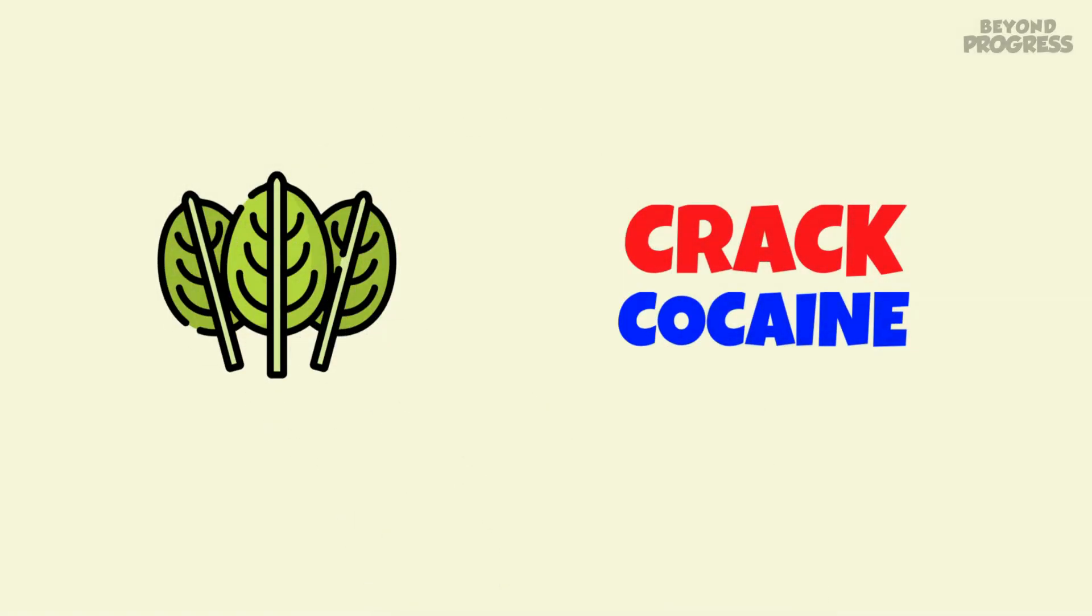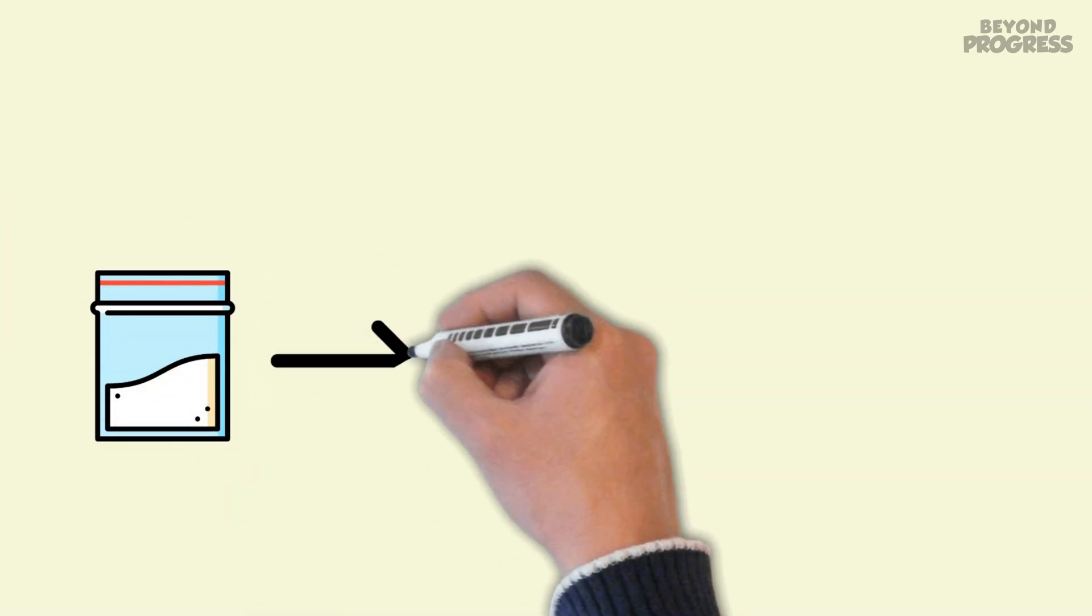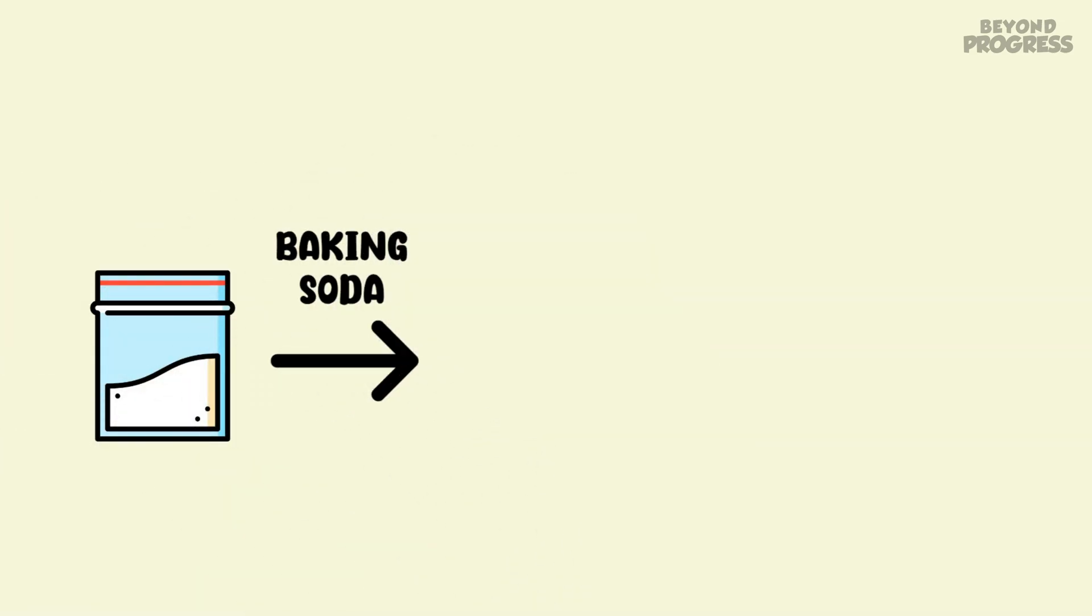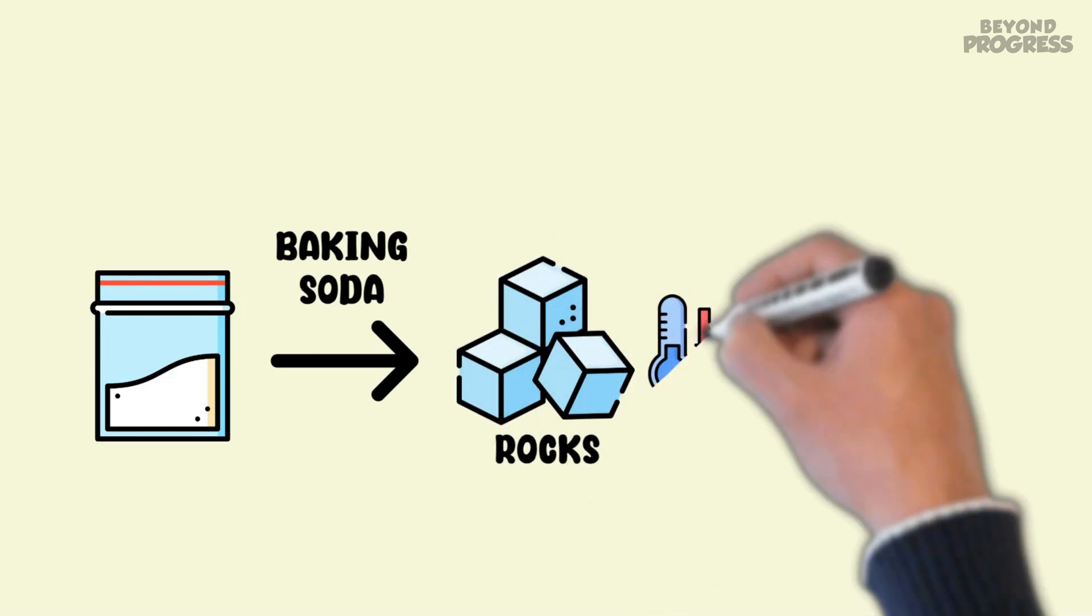Crack cocaine is essentially a variation of cocaine derived from coca plant leaves. When powdered cocaine is combined with a weak base like baking soda, it transforms into solid chunks known as rocks. These rocks have a lower melting point than cocaine, making them suitable for smoking rather than snorting.